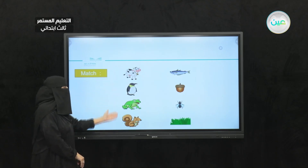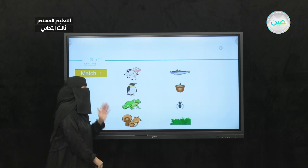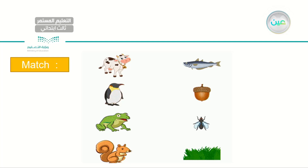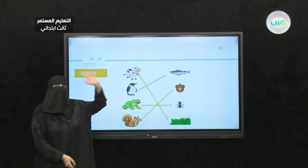To your left I have different kinds of animals, and to your right I have their favorite food. Let's start with a cow — what do cows eat? The answer is definitely grass. Cows eat grass. For the next animal, I have a penguin. What do penguins eat? They eat fish. Next I have a frog — what do frogs eat? They eat flies or insects. And for the last animal, I have a squirrel — squirrels love to eat nuts.